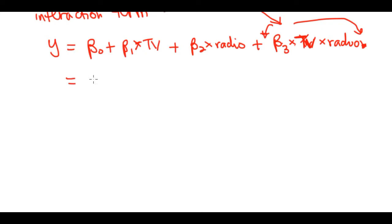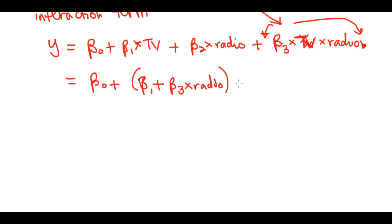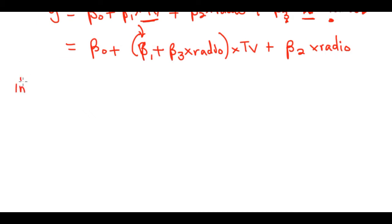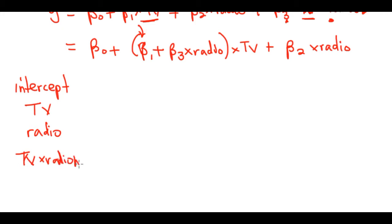Someone might want to rewrite this by factoring out TV from the first and third terms, giving: y = (β₁ + β₃·Radio)·TV + β₂·Radio + β₀. This shows that the effective slope on TV is no longer constant — it now depends on the value of radio. Let's look at the results when we run this in R with TV, Radio, and the TV×Radio interaction term.